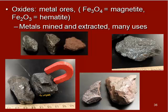Then we have oxides, which are metal ores. This is where we get a lot of the metals we use. Magnetite has iron and oxygen, and hematite also has iron and oxygen — so these are major sources of iron. These are going to be mined and extracted. Metal ores have some type of metal, like iron, bonded with oxygen to create oxides. All of these oxides are also subject to tarnishing or rusting.